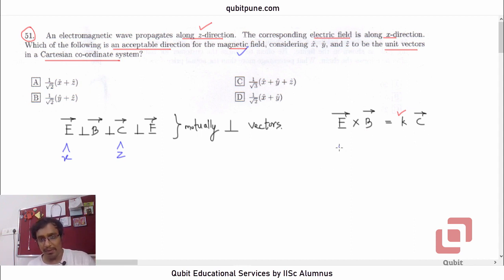If E is X cap or I cap in our usual notations, what should B be so that we get Z cap or K cap? That vector is Y cap or J cap. That's the only possible direction.